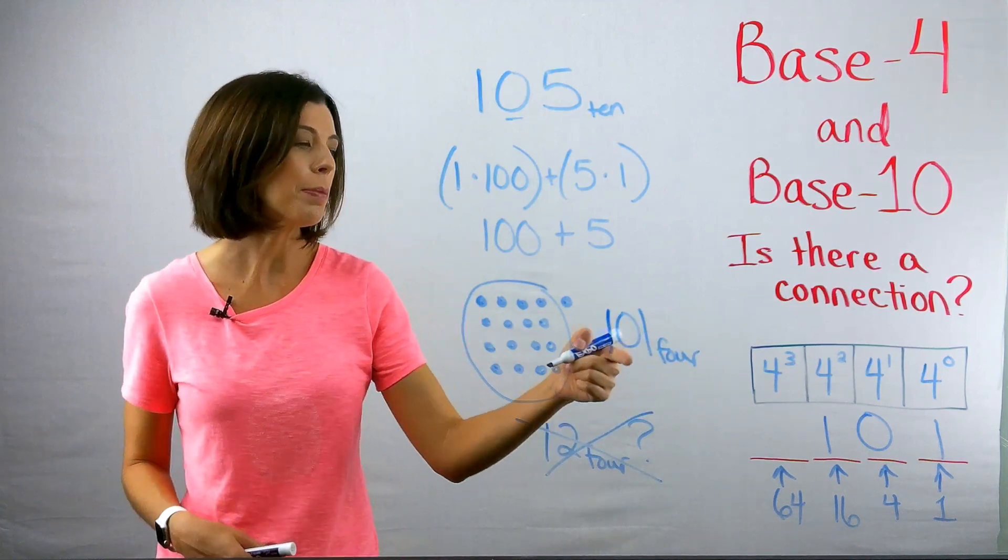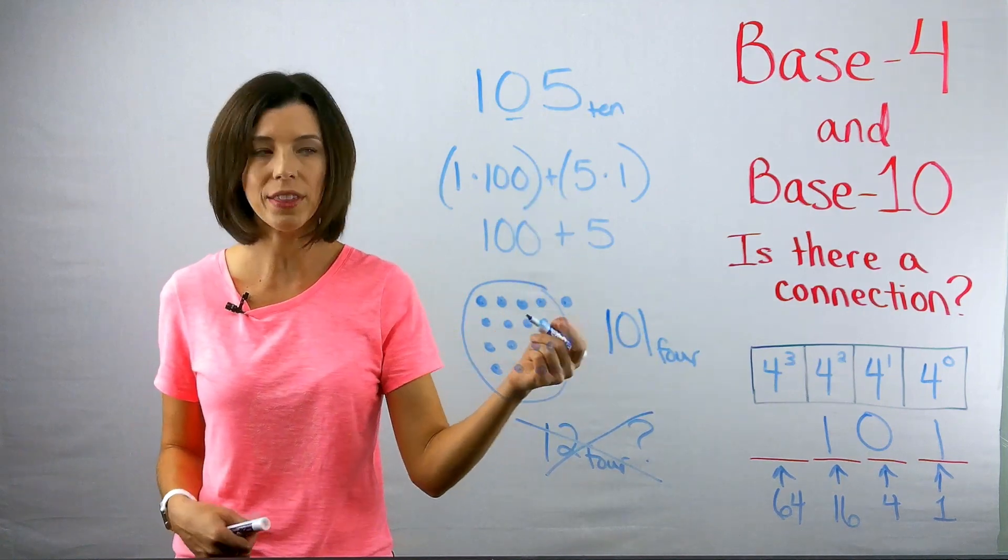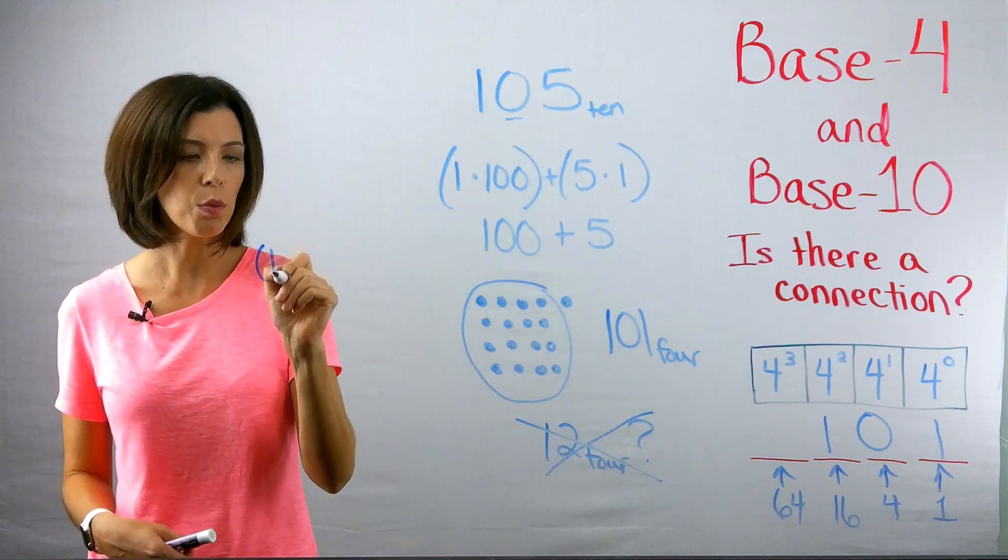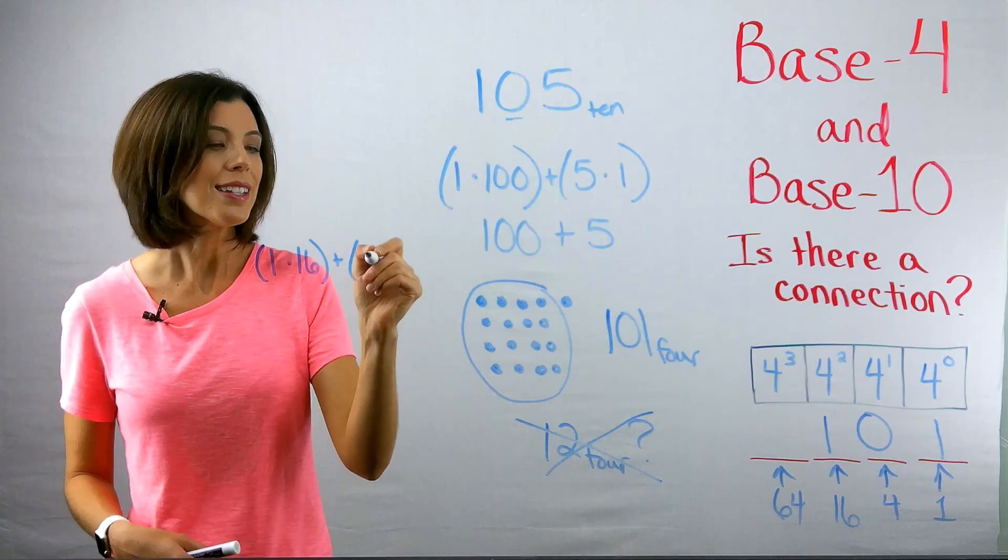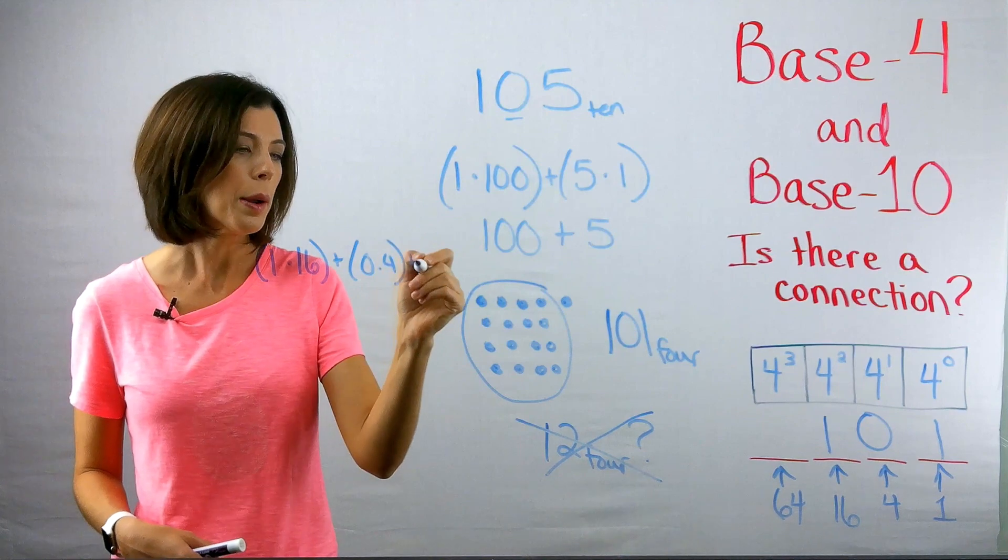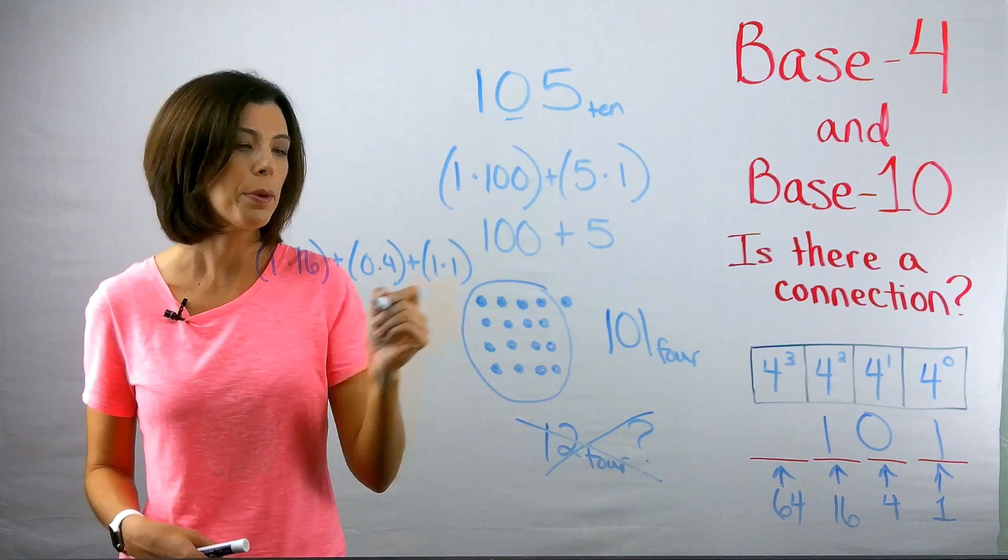Now thinking about expanded notation in base four versus base 10, what would that look like? Again, I would have one group of 16 plus zero groups of four plus one group of one.